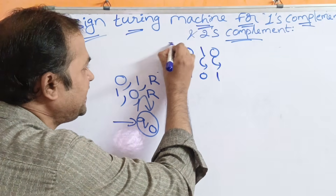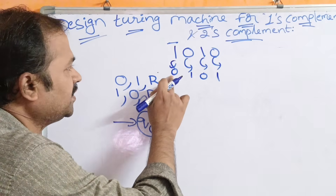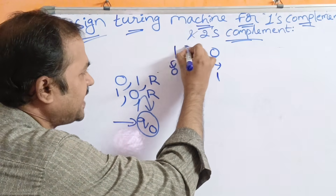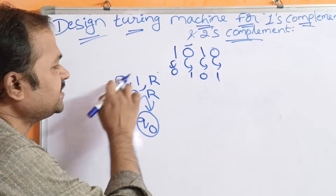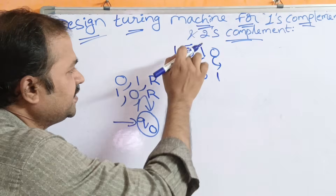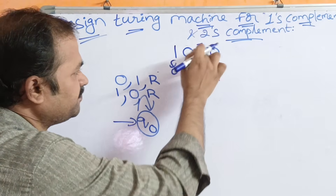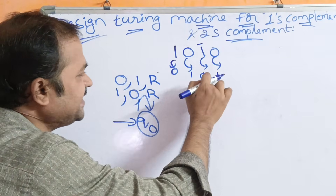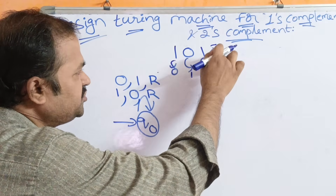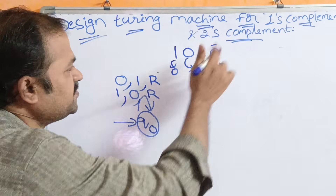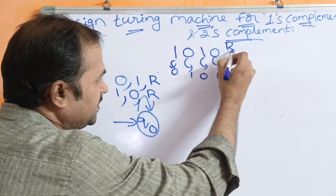The read-write head is first at 1, so 1 is replaced by 0 and the head moves right. Next is 0, so 0 is replaced by 1 and the head moves right. Next is 1, replaced by 0 and head moves right. Next is 0, replaced by 1 and head moves right.